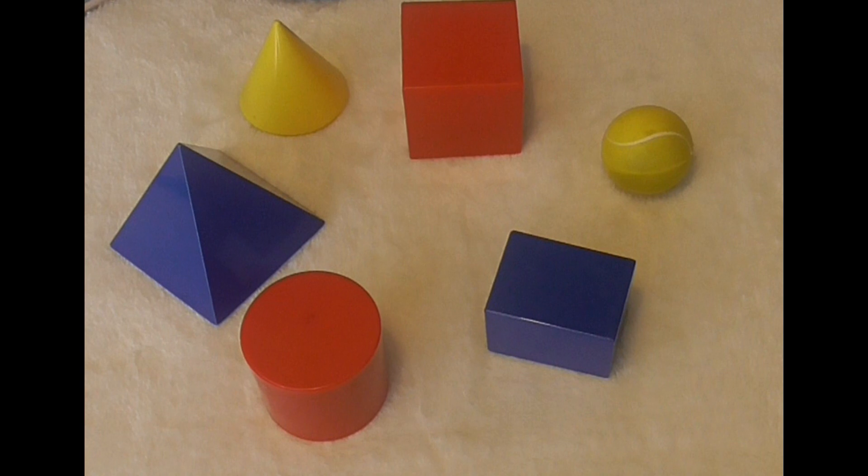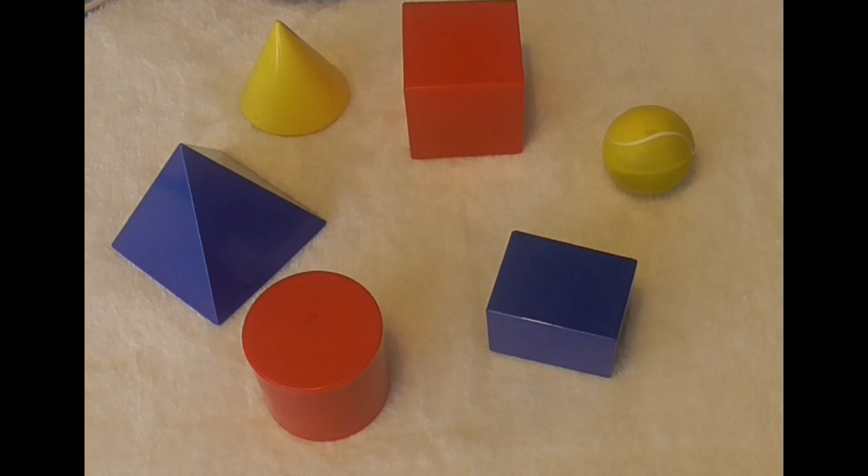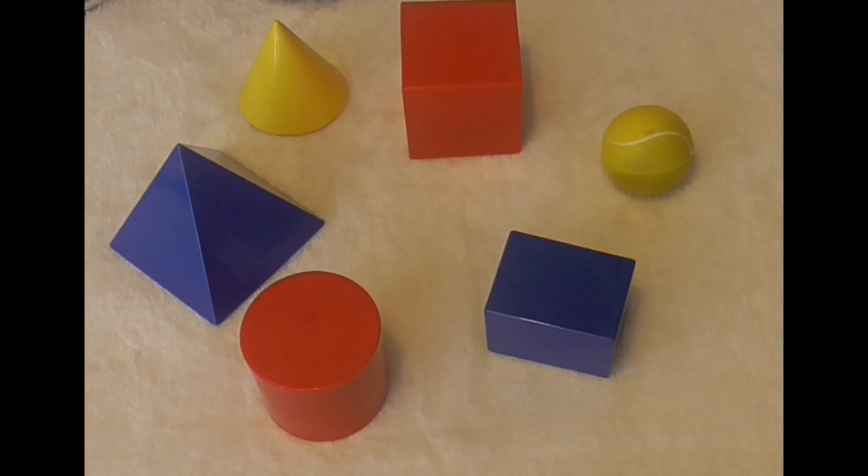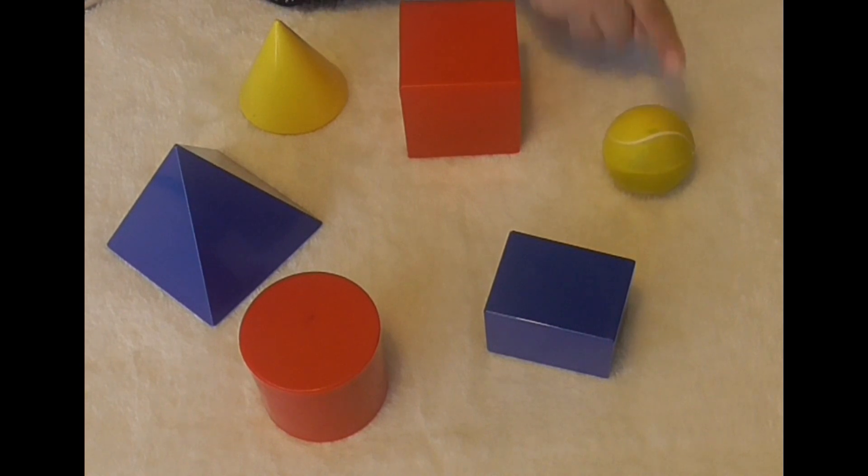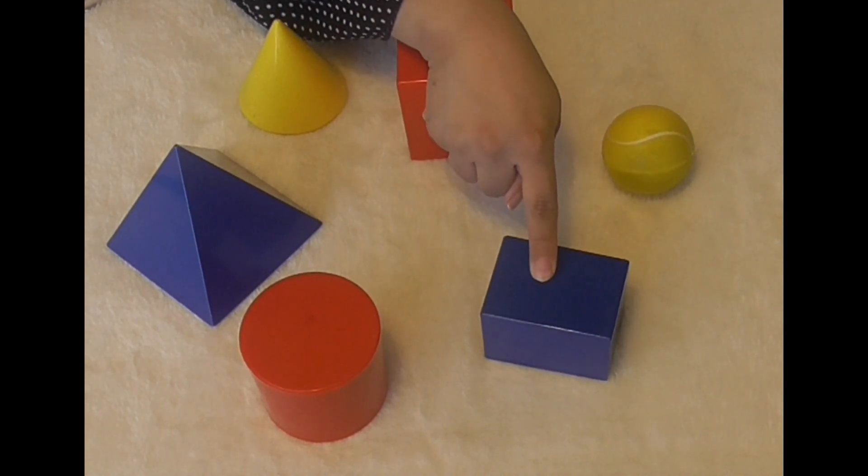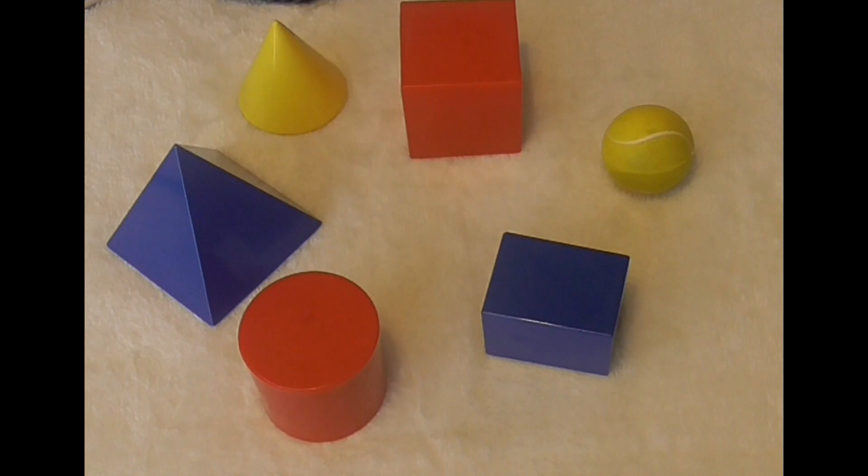So, before we play our missing shape game, let's go through all the shapes first. Pyramid, cone, cube, sphere, cuboid and cylinder. Which shape have I taken away?